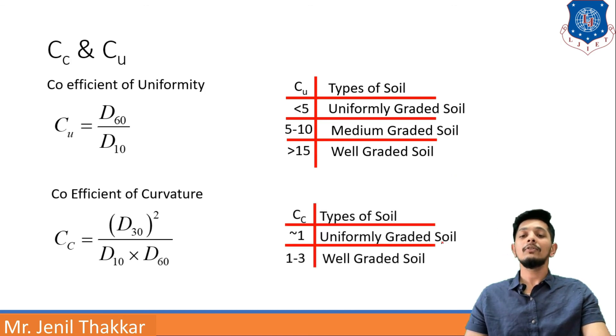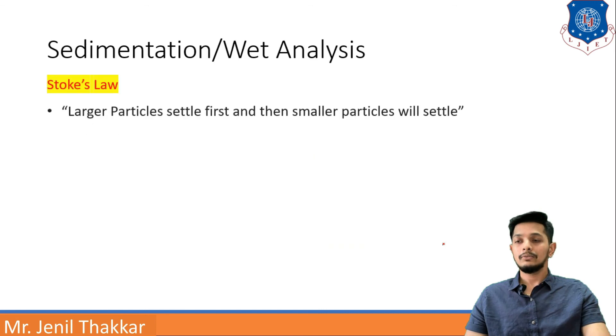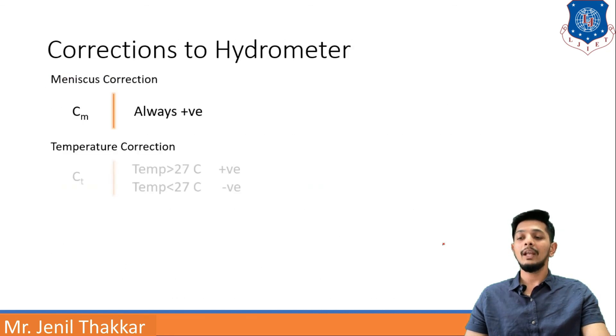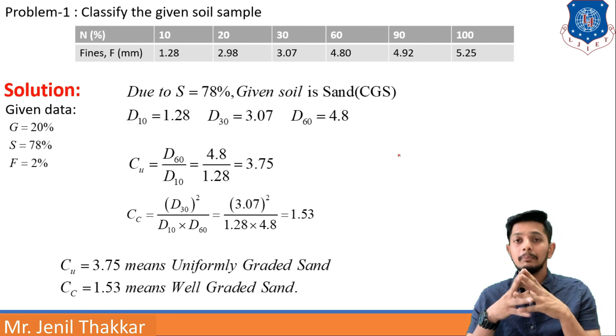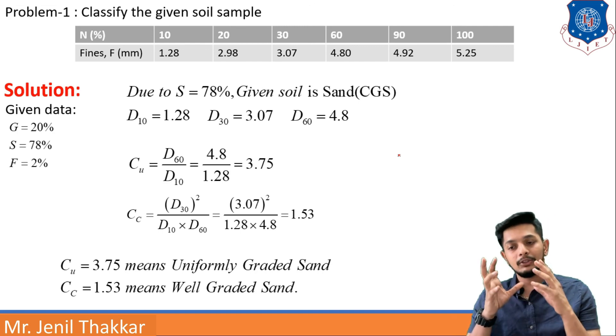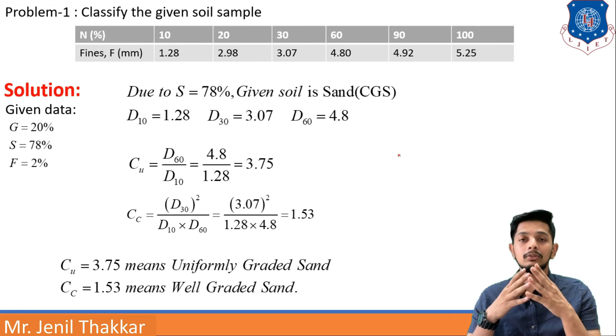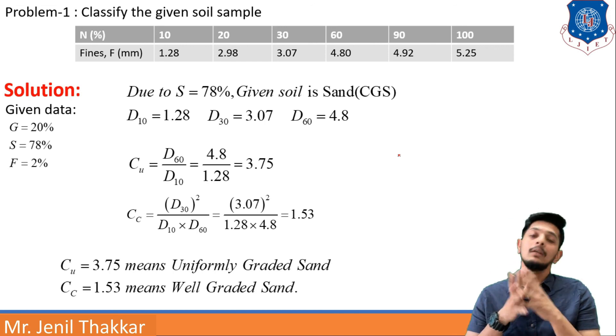And for Cc, the value as Cc is 1.53, it ranges between 1 to 3, it will be a well graded sand. Both are sand, it is predefined but one is uniformly graded according to Cu and according to Cc it is well graded. So that is how you can calculate numericals of this chapter.